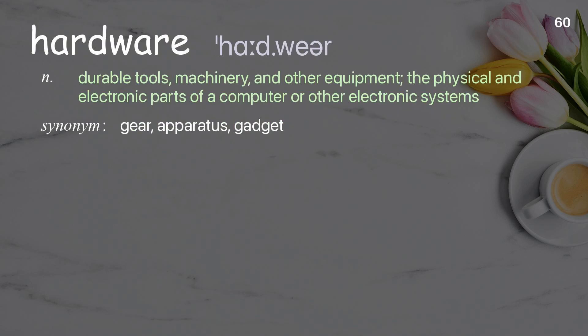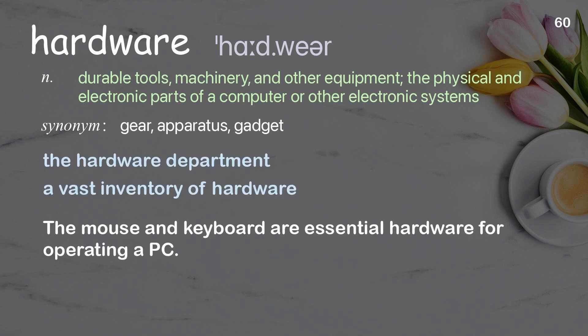Hardware. Durable tools, machinery, and other equipment; the physical and electronic parts of a computer or other electronic systems. Examples: the hardware department, a vast inventory of hardware. The mouse and keyboard are essential hardware for operating a PC.